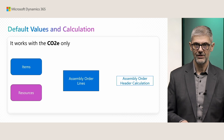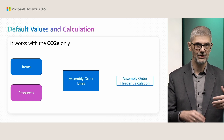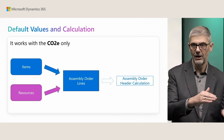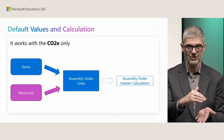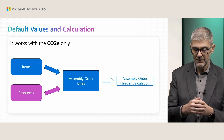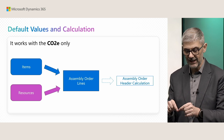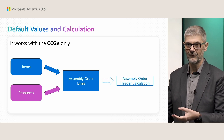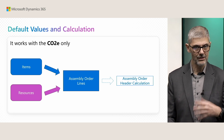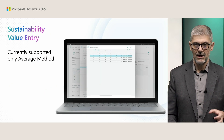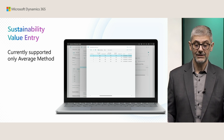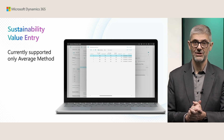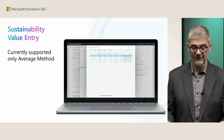In assembling, everything starts with items and resources. You can configure your sustainability account and your emissions for both items and resources. When you create an assembly order, all these emissions will be transferred to your assembly item. When you post, you will get information on the assembly order header calculation, using all incoming information from assembly lines. The final result is that we will get a sustainability value entry used for calculation of item emission. The system currently works only with the average method.